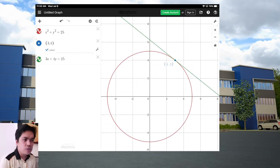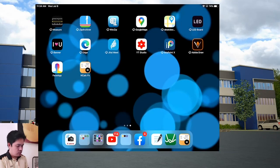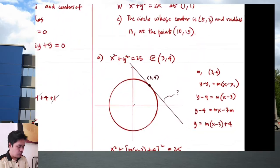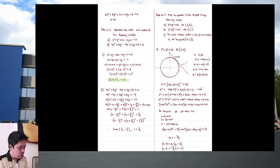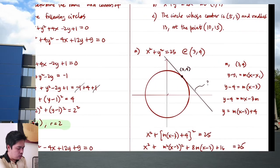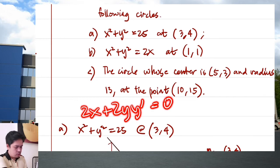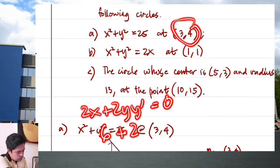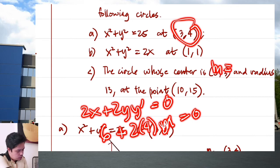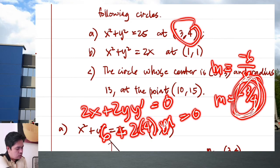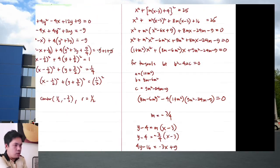Using differential calculus, this is much simpler: differentiating x² + y² = 25 gives 2x + 2y·y' = 0. Substituting (3, 4): 6 + 8y' = 0, so y' = m = −6/8 = −3/4. That immediately gives the slope, demonstrating how calculus makes this problem much faster.